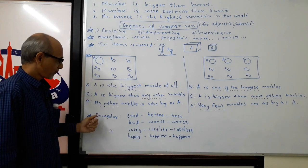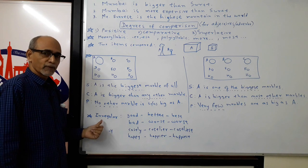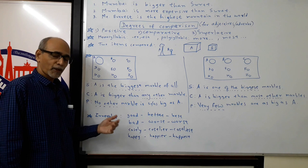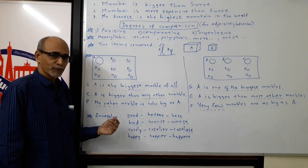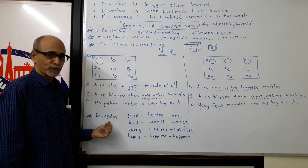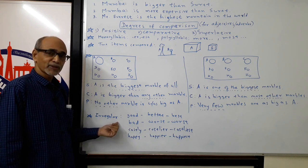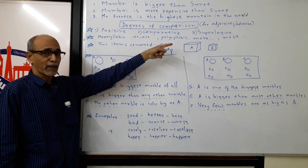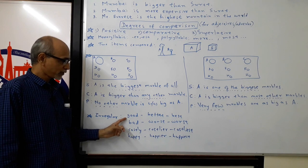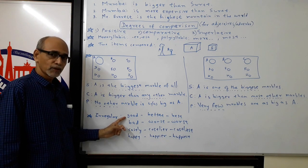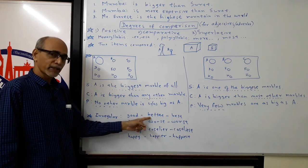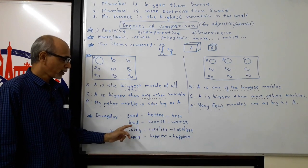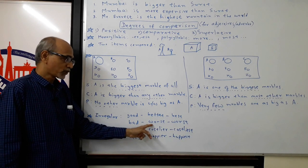A final point: when you say big, bigger, biggest, fast, faster, fastest, that's not a problem. But apart from that, there are quite a few adjectives and adverbs where irregular forms are used. Irregular means they don't follow either -er, -est or more and most pattern. They are different. For example, a word like good: for good, the comparative form is better and the superlative form is best. Good, better, best. Similarly, for bad, we have worse and worst.